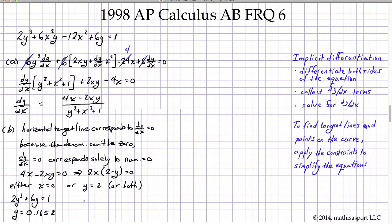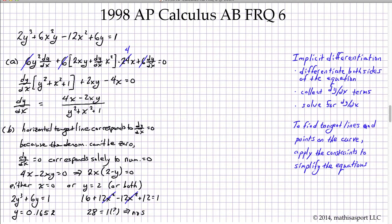Now for the case when y equals 2: substituting back into the original equation gives 16 plus 12x squared minus 12x squared plus 12 equals 1. The x squared terms cancel out, leaving 28 equals 1, which has no solution. No value of x satisfies that equation, so there is no y equals 2 case. We move on to Part C.